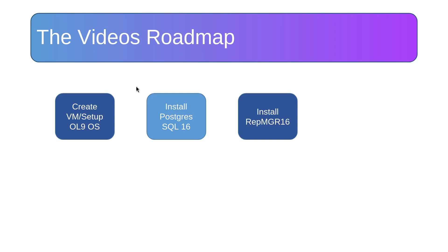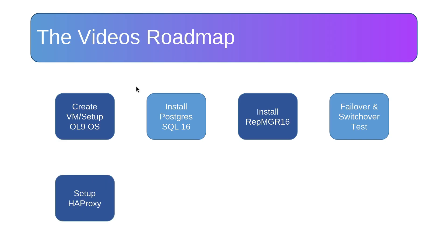Then we will move to the failover and switchover test and make sure the replication is working between the three nodes. After that, we will set up HAProxy to act as a software load balancer. We will set up two backends: the first backend with port 5000 for read-write operations, and port 5001 for read-only operations.